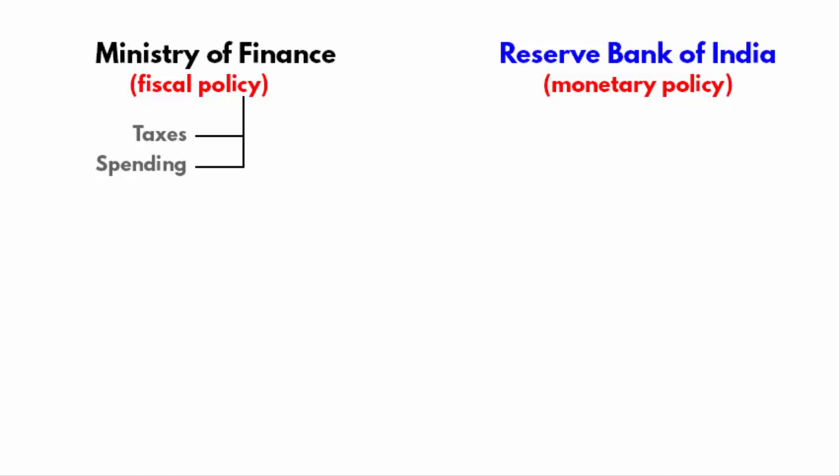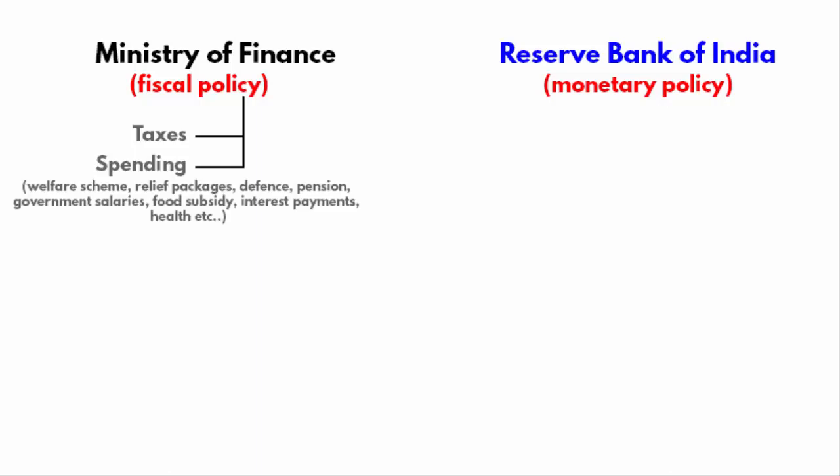The tools are taxes and spending. The government has the right to collect taxes and any changes in tax policy will have some noticeable changes. Similarly, the money collected through tax is used by the government in supporting various welfare schemes, relief packages, defence, pension, government salaries, food subsidy, interest payments, health and many such areas.